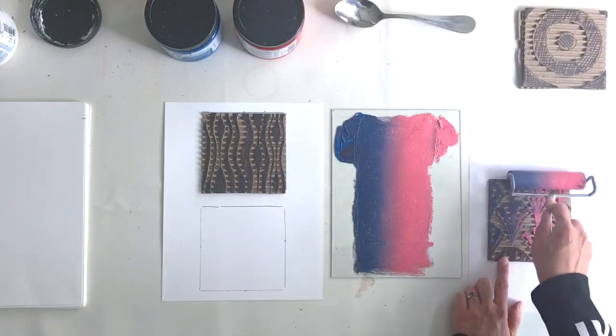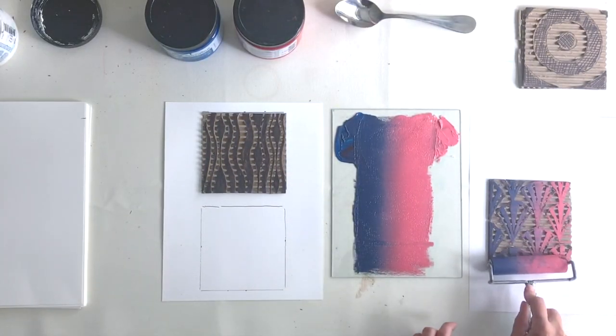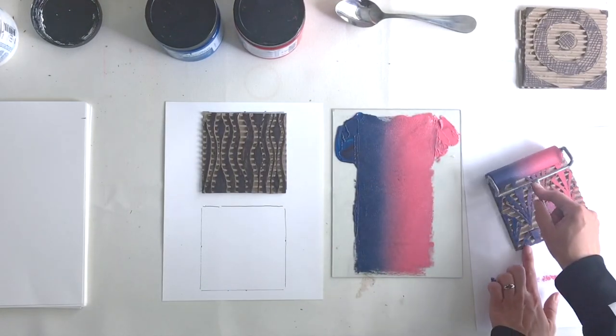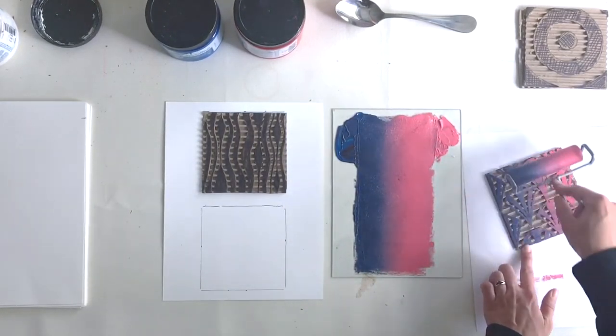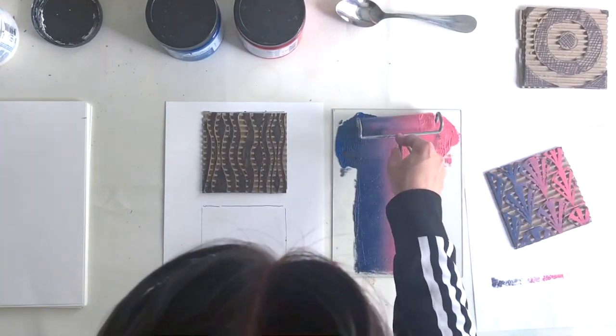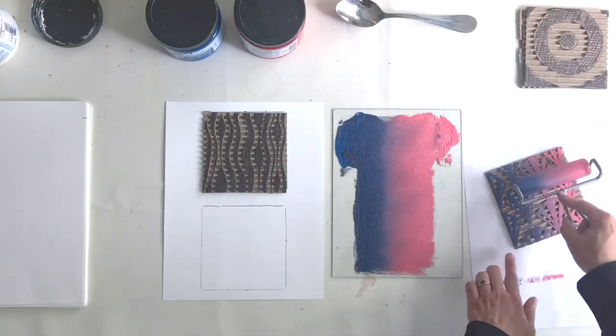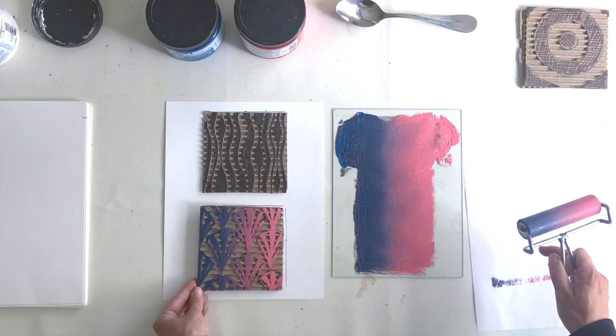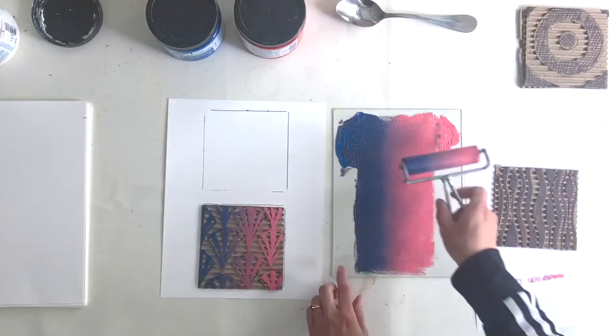Here I'm using a variegated ink mixing technique with pink and blue ink. It's actually called a rainbow roll technique. It's one of my favorites. Later on in the video, you will see how to set this up. I'll ink the block using my multicolored brayer, and then I'll place them on the registration template.